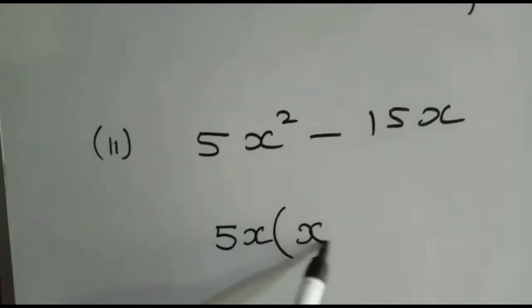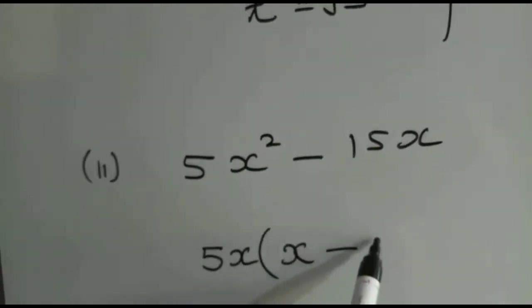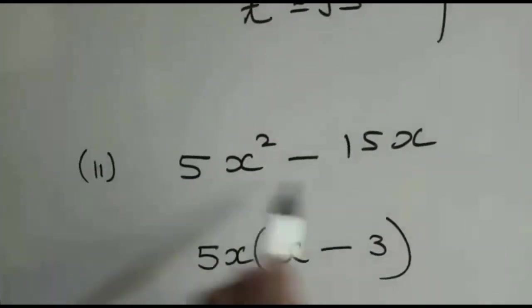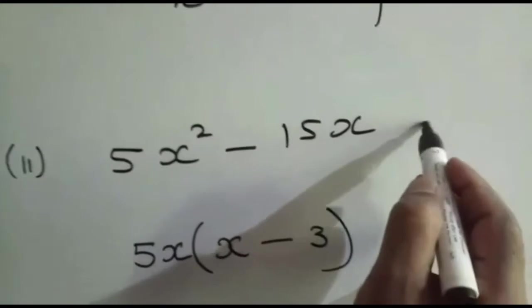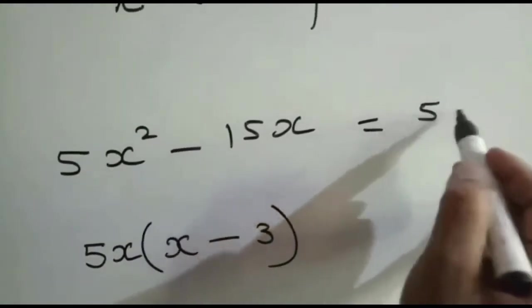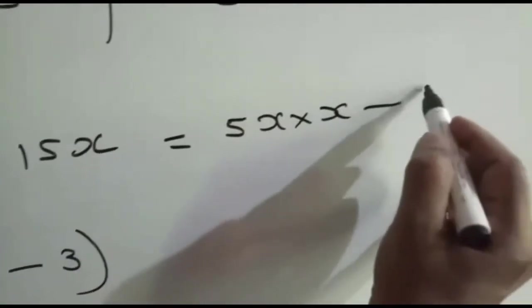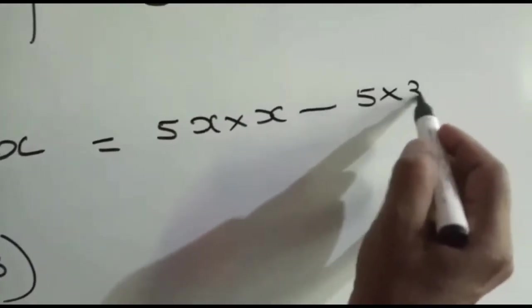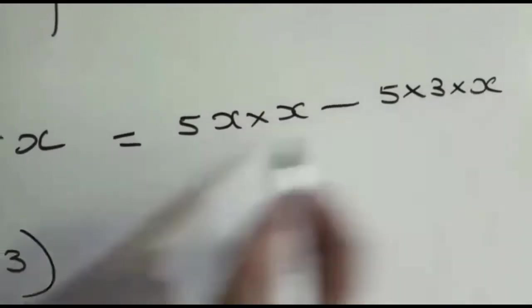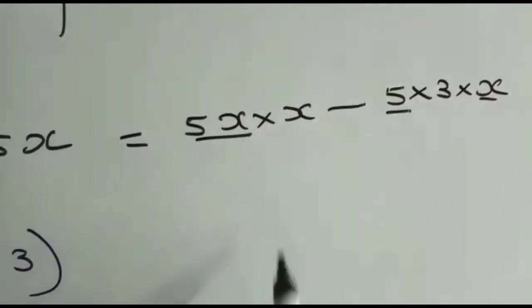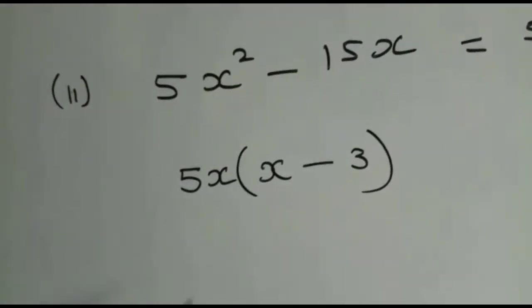5x times (x - 3). If you have difficulty, you can also write this as 5 × x × x - 5 × 3 × x. Then from this you can take common 5x, so that way you can write it.